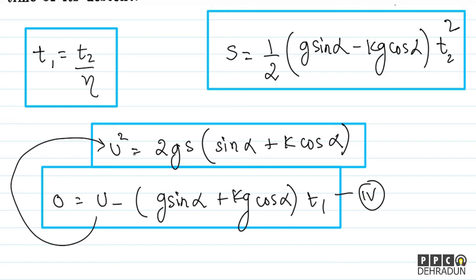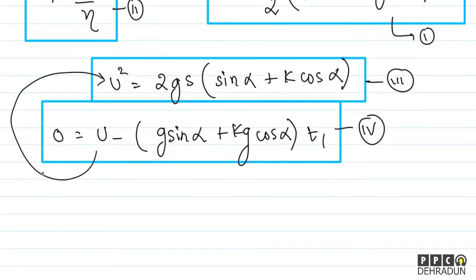Let's call the equations: Equation 1 (t2 squared), Equation 2 (t1 squared form), Equation 3 (the ratio condition). From Equation 2, I can get t1 squared upon t2 squared, which will give me k. From the fourth equation: u = g(sin alpha + k cos alpha)·t1.